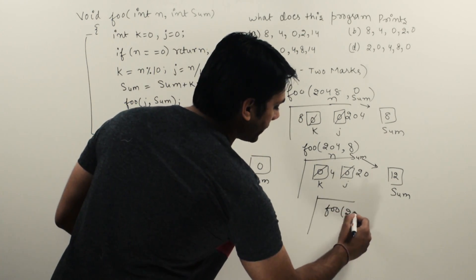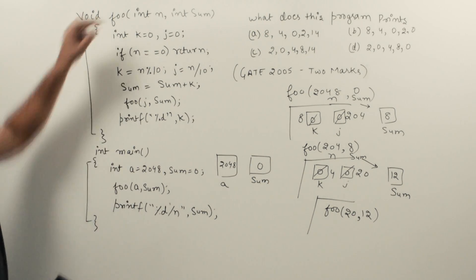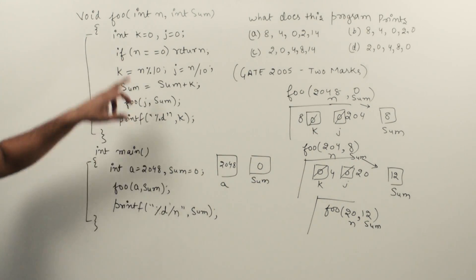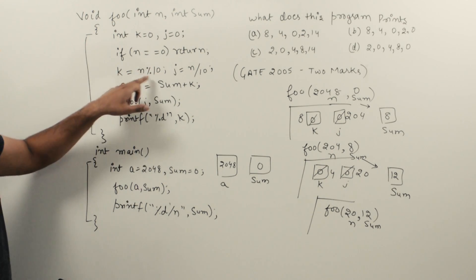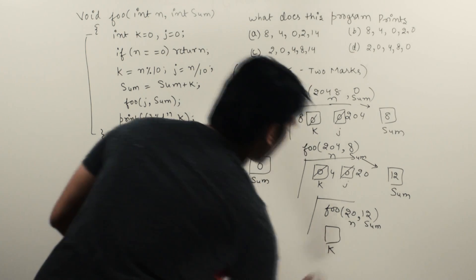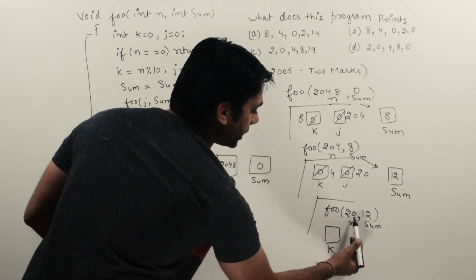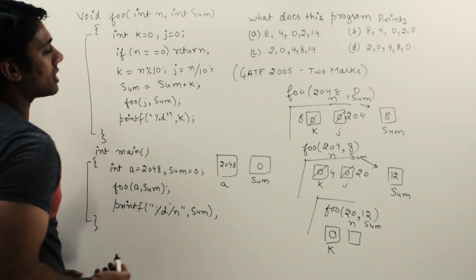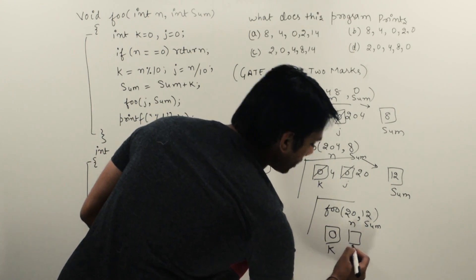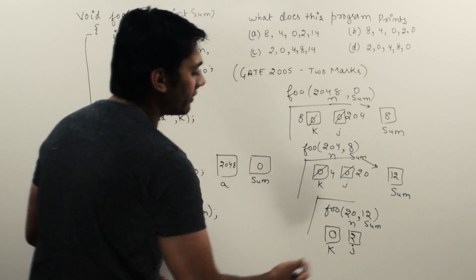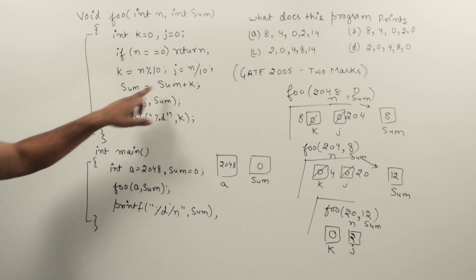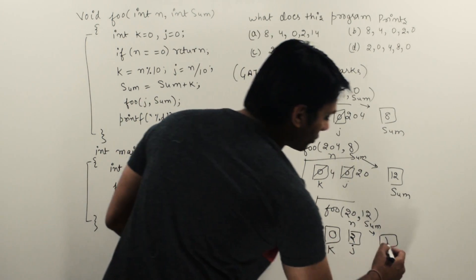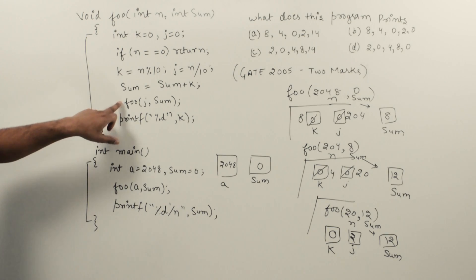Now n is 20 and sum is 12. Since n is not equal to 0, k is equal to 20 mod 10, which is 0, so k is 0. j is equal to 20 divided by 10, which is 2. Sum becomes sum plus k: 12 plus 0 equals 12. Then we call foo again passing j and sum — that is, foo(2, 12).